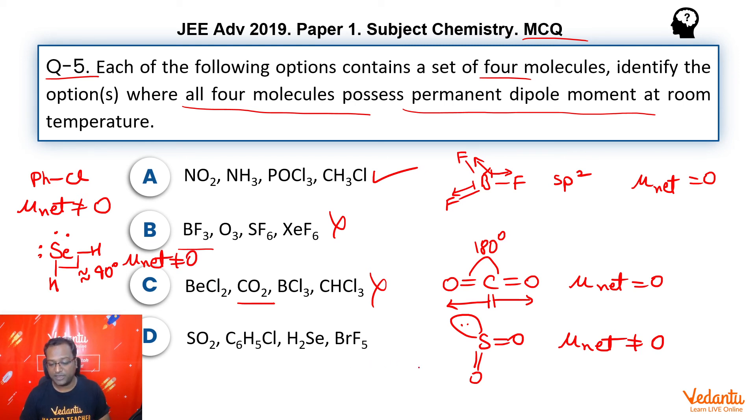Okay. Last, BrF5. BrF5 structure, you will have one bromine. You will have five fluorines attached. And you will have one lone pair also, right? So, as you can again see, mu net will not be equal to zero. And therefore, A and D both are the answer.